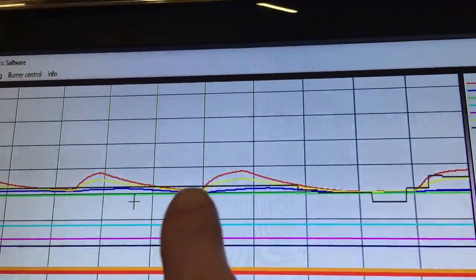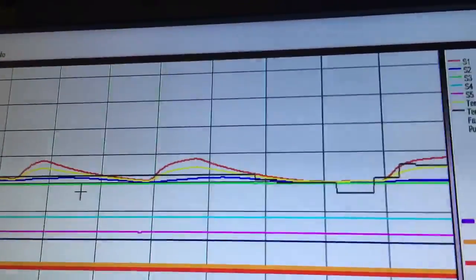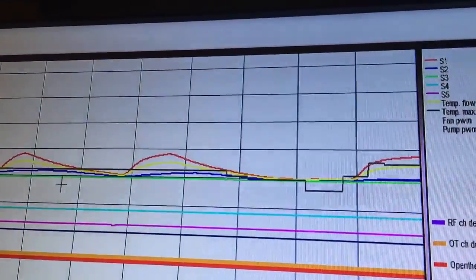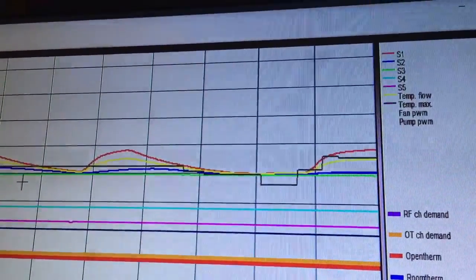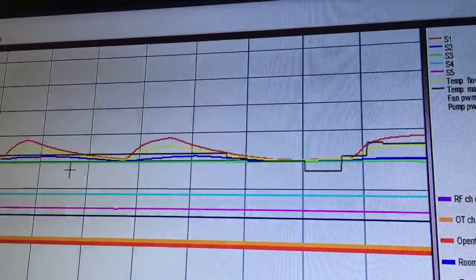Which if you relate it over to here where we were before, you can see it's actually calling for 45 degrees over there. So with the room compensation on, it calls for a bit more higher temperature than if you were just using the outside temperature compensation on its own.